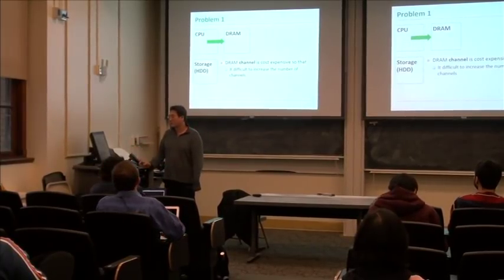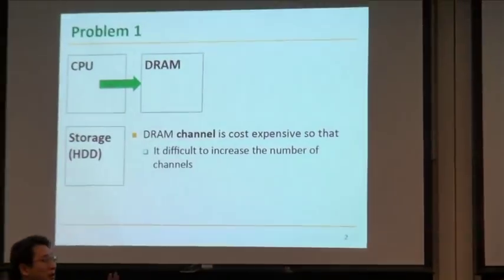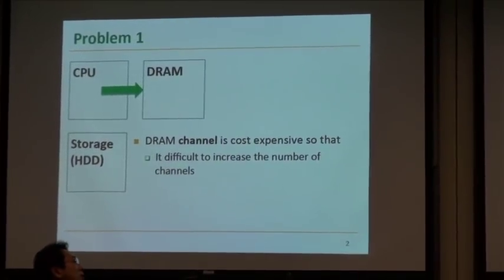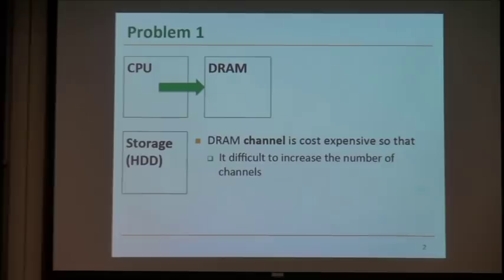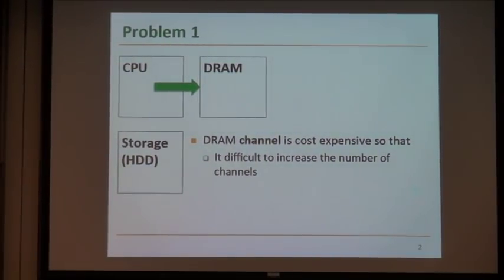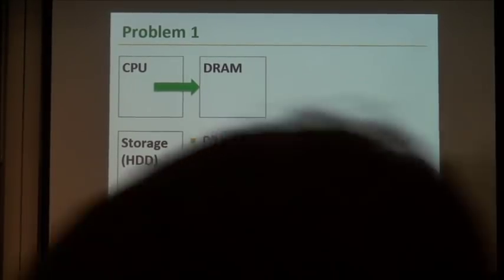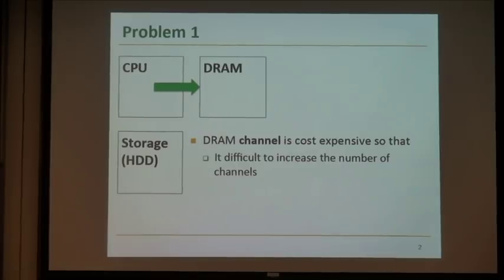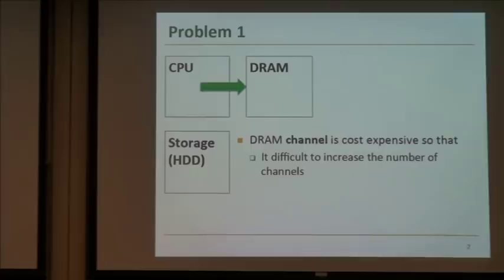So here's the problem. There's a CPU, DRAM, and storage in a very simple architecture. The problem is that the cost of the channel between CPU and DRAM is very expensive. To add more channels, we need to add a lot of pins into the CPU side, so it's difficult to increase the number of channels between CPU and DRAM.